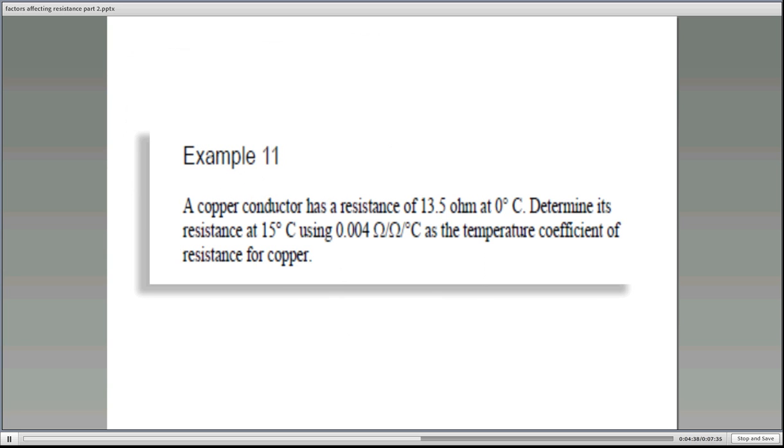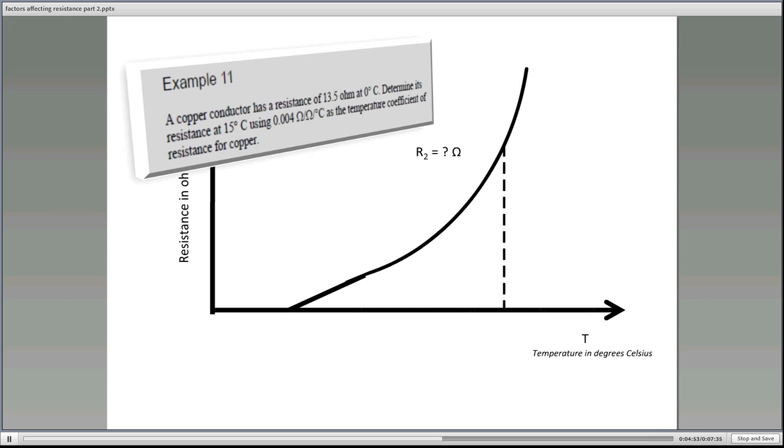So here's an example. A copper conductor has a resistance of 13.5 ohms at zero degrees. So determine its resistance at 15 degrees using 0.004 ohms per ohm per degree Celsius as the temperature coefficient of resistance for copper. So here's the information here. We're going to actually fill out this graph here. So there's our equation.